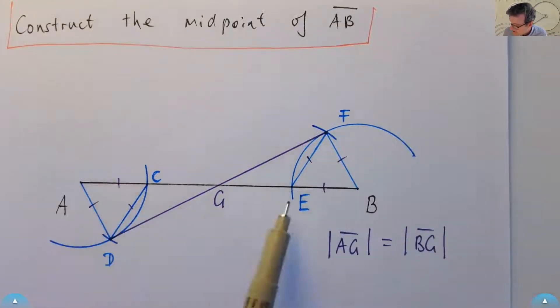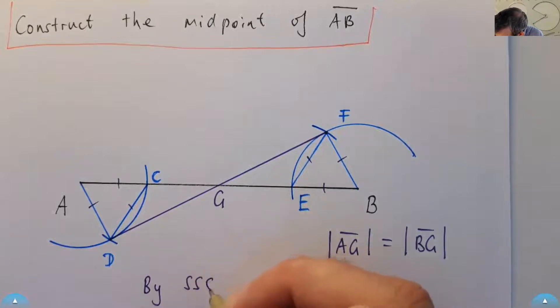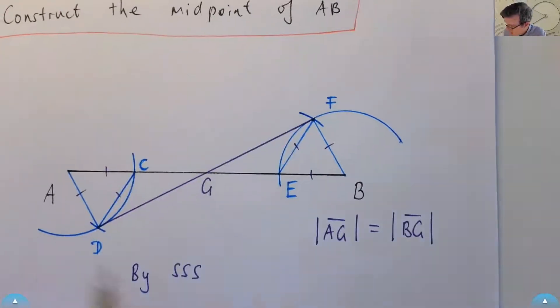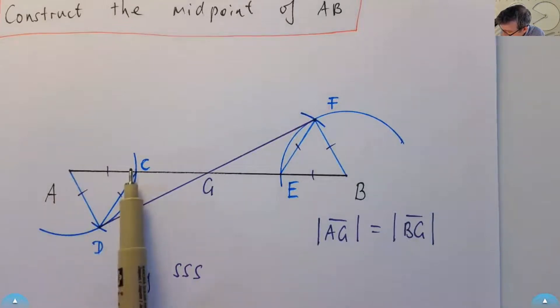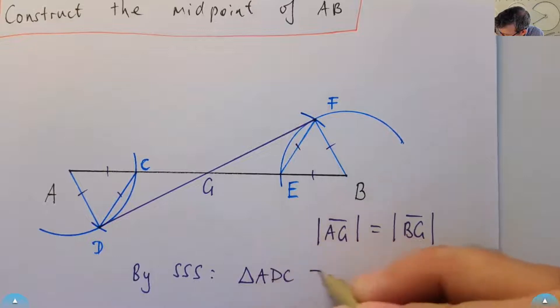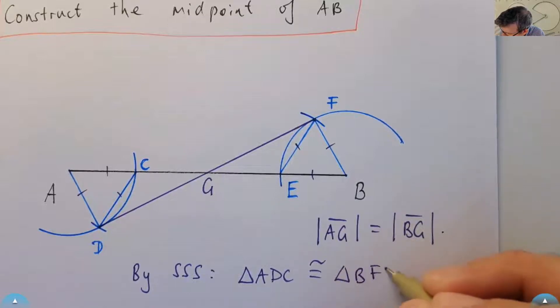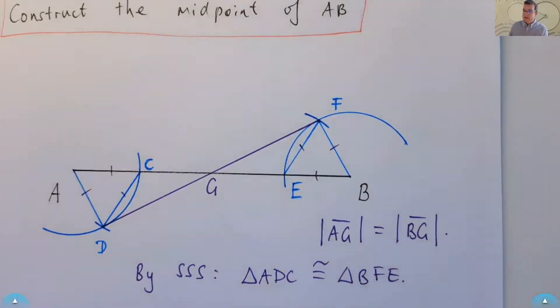So the first thing I would say is that this triangle is congruent to this triangle. Why? Because of the side, side, side rule. So by side, side, side, triangle ADC is congruent to triangle BFE. So what does that mean? Well, it means that the corresponding angles are equal in the triangle.